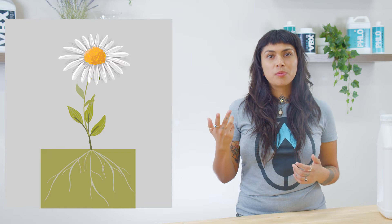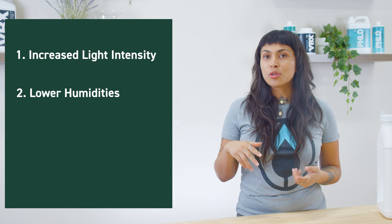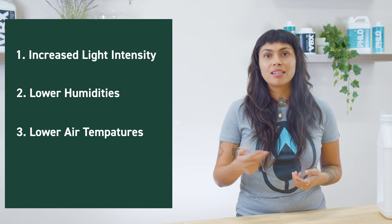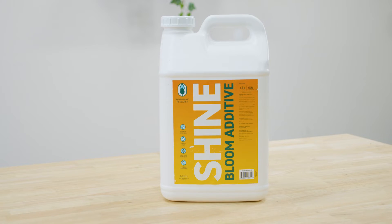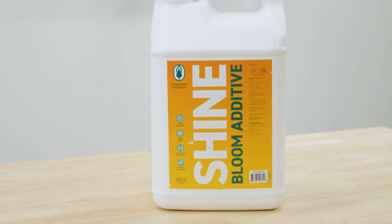Generative steering, on the other hand, signals the plant in a completely different way. While generatively steering, we are essentially threatening our plants with drought conditions. Our plant's stress response is to focus on a method of survival: reproduction. This means an increase in pre-flowering sites for a higher probability of pollination. Environmental conditions that promote generative steering include increased light intensity, lower humidities and air temperature, and increased CO2 concentrations. Use Shine in conjunction with your appropriate base to provide ideal nutrition and leverage a stronger generative response.